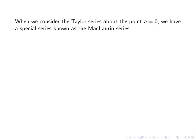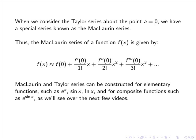Thus with a equals 0, the Maclaurin series of a function f(x) is given by f(0) plus f'(0) over 1 factorial times x plus f''(0) over 2 factorial times x squared plus f'''(0) over 3 factorial times x cubed, and so forth.